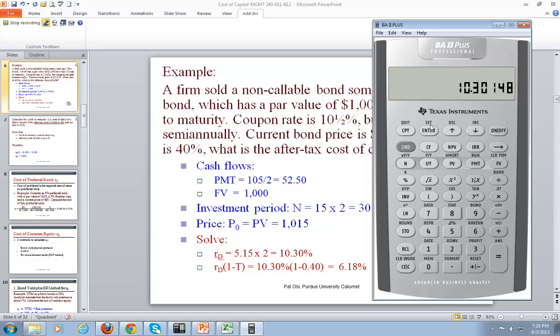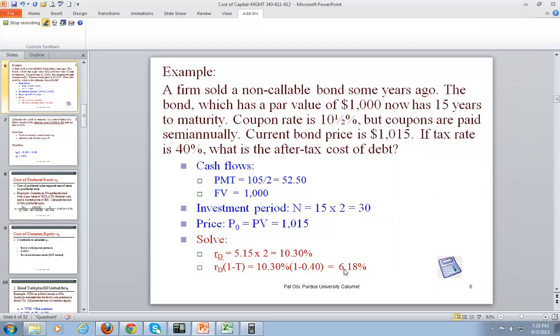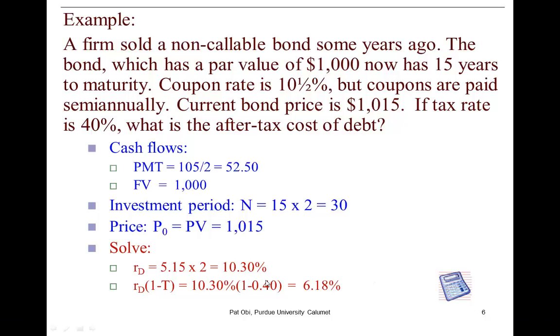In this case, it comes out to be 10.3%, which is what you see here. Keep in mind that the effective cost of debt to a firm is the after-tax cost of debt. Why? Because interest payments on debt are tax deductible. If this firm's tax rate is 40%, then the after-tax cost of debt comes out to be 6.18%.